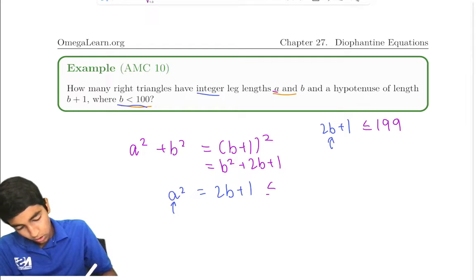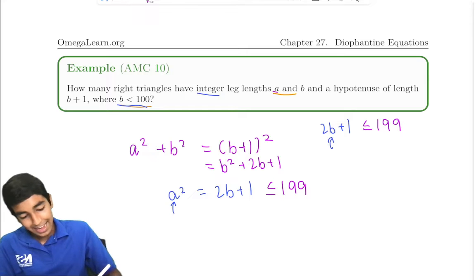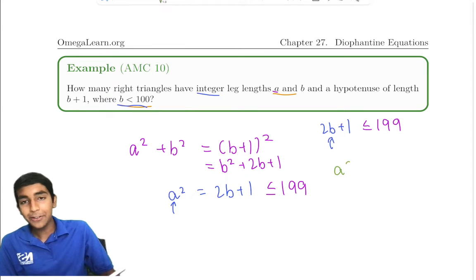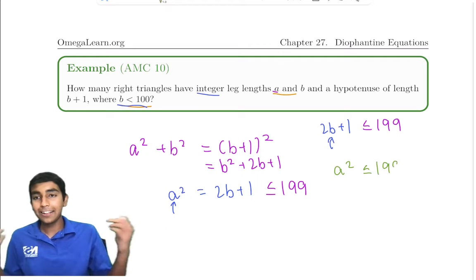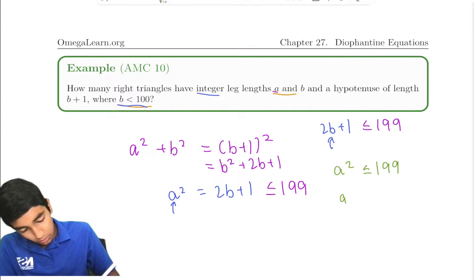This is less than or equal to 199. So that means a² is less than or equal to 199. Let's take the square root of both sides. We get a is less than or equal to 14.